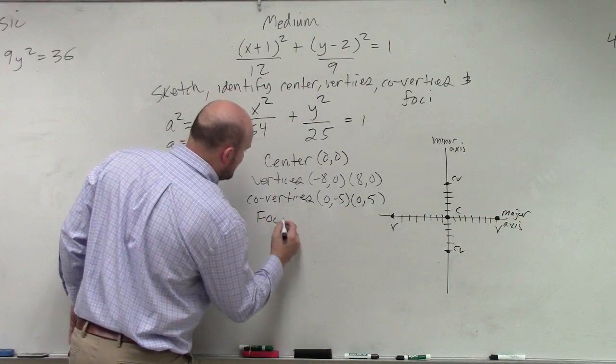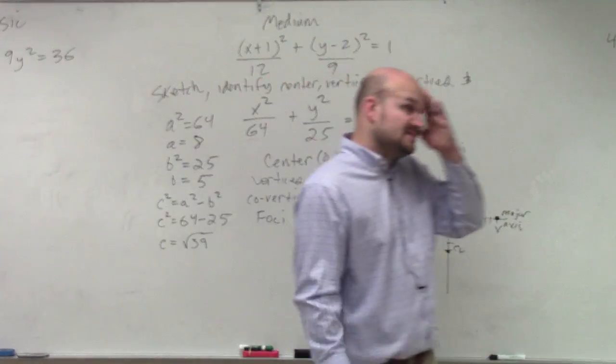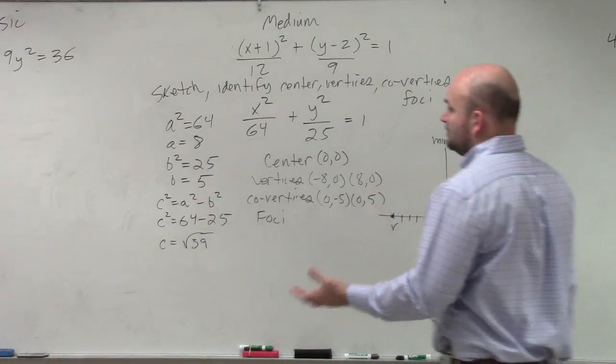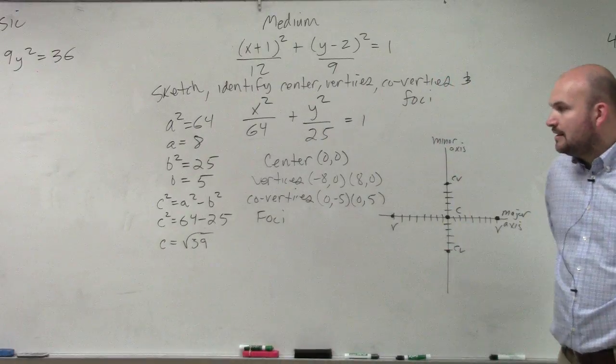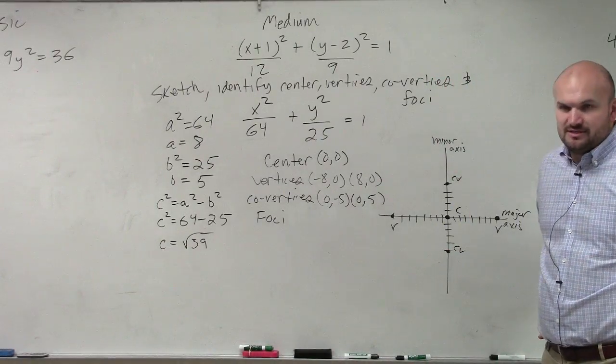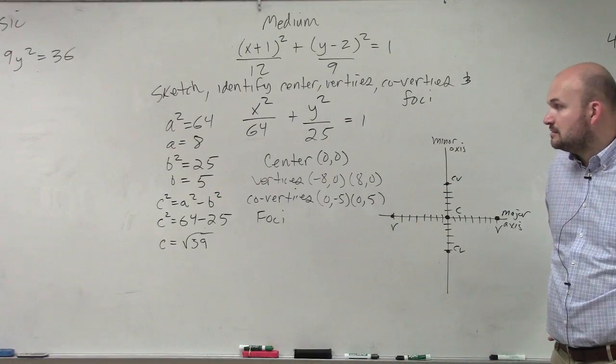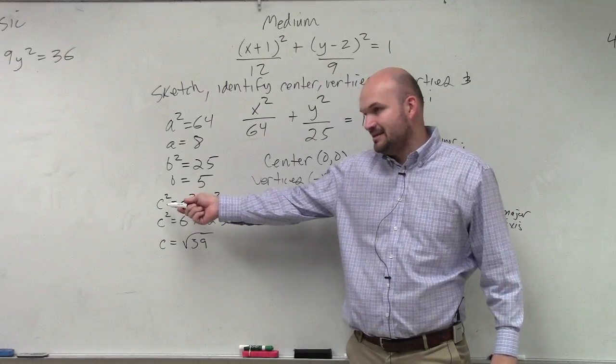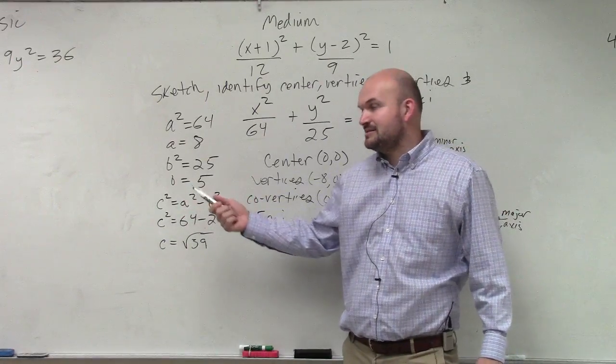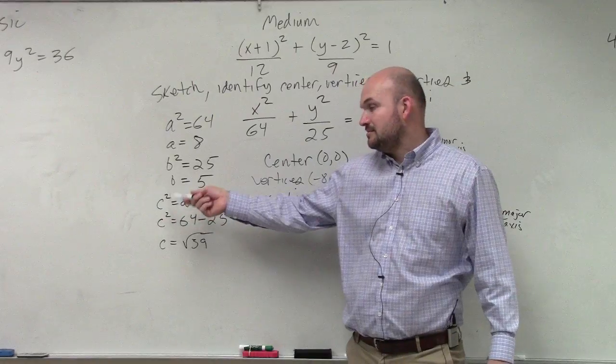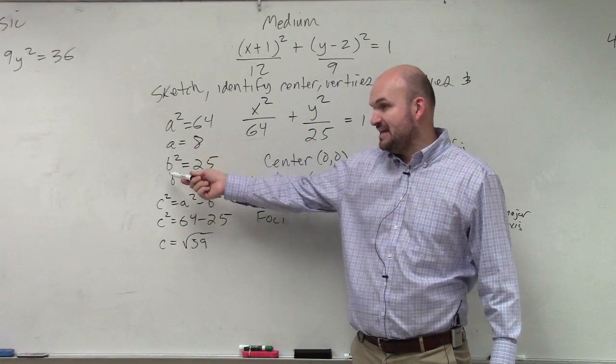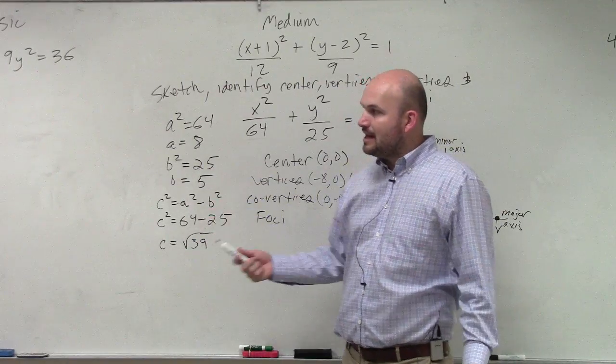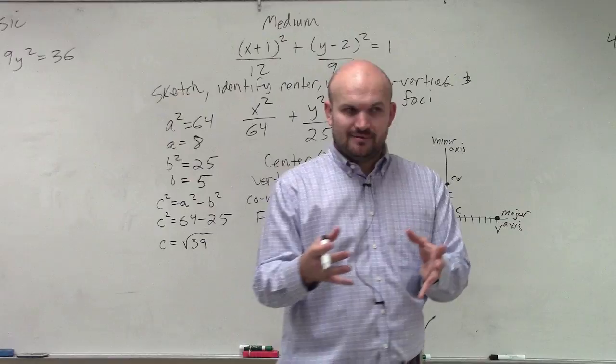And then last but not least is our foci, which is the distance from the center to the foci, which is our C. So that's the distance from our center to our foci. That doesn't look as fun, square root of 39, as far as graphing them, right? C is the distance from the center to your foci. C, A, center to vertices. B, center to co-vertices. C, center to foci. Now, we need to know where is the foci. Where do the foci go?